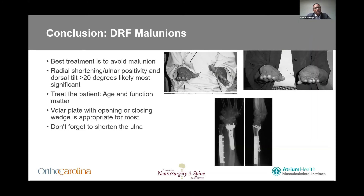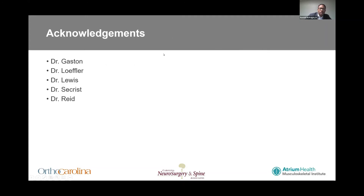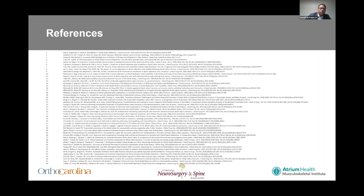To conclude: the best treatment for distal radius malunion is to avoid the malunion in the first place. Radial shortening or ulnar positivity, as well as dorsal tilt greater than 20 degrees, are likely the most significant deformities. Remember to treat the patient, not the x-ray — age and function do matter. A volar plate with opening or closing wedge osteotomy is appropriate for most deformities. And when in doubt, don't forget to shorten the ulna.